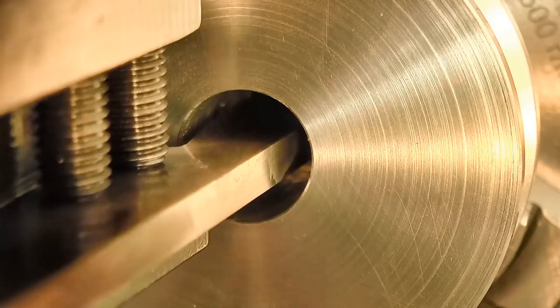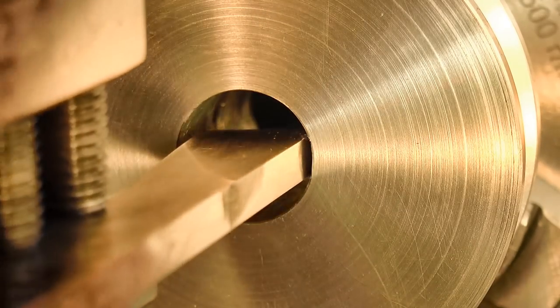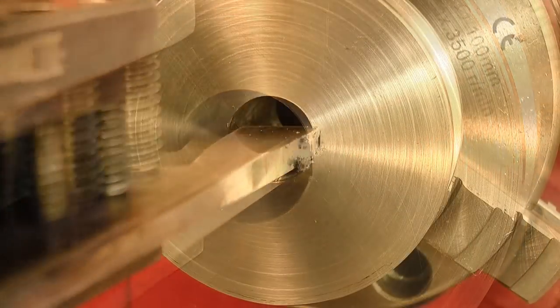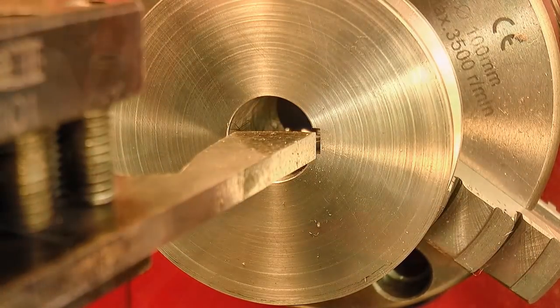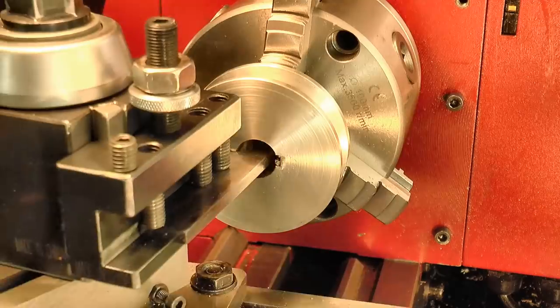I started by feeding in 2 thousandths with each pass, but as the cut became more established, I had to reduce that to 1.5 thou per cut, and make 3 passes at each depth. I found that any more than that put too much strain on the carriage wheel.